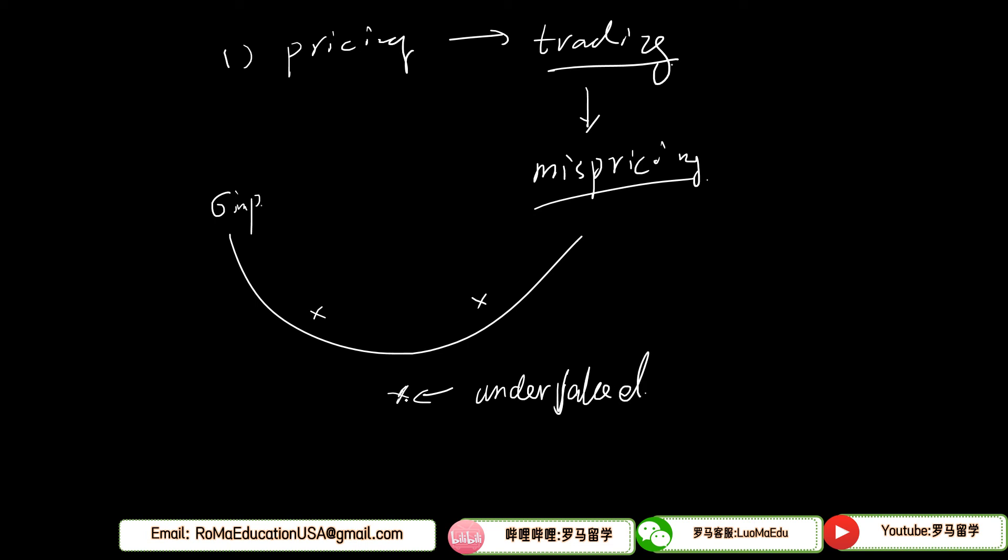Here in this case, the money we use in long is from the short part. So it's a self-financing, and the profit comes from the relative mispricing. So this strategy is called relative value strategy, short for RV strategy.